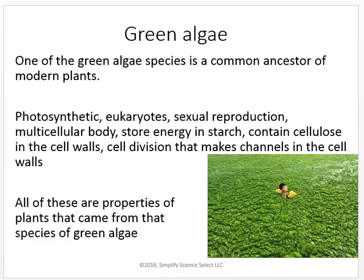One species of green algae is a common ancestor of modern plants. It was photosynthetic, eukaryotic, had sexual reproduction and multicellular bodies, stores energy as starch, contains cellulose in cell walls, and cell division makes channels in cell walls. All of these properties came from that species of green algae.